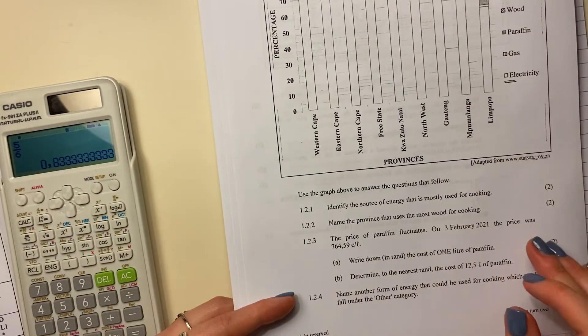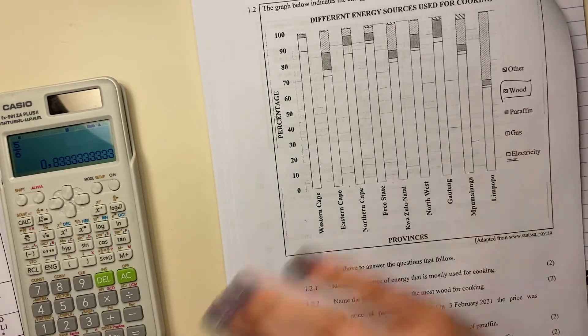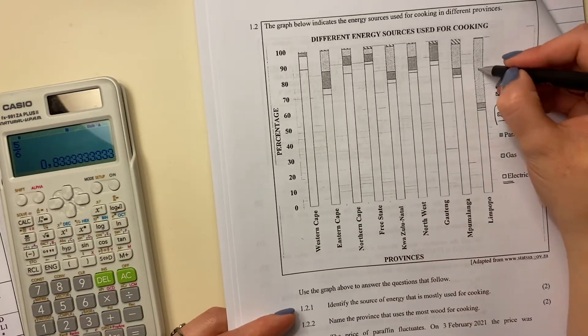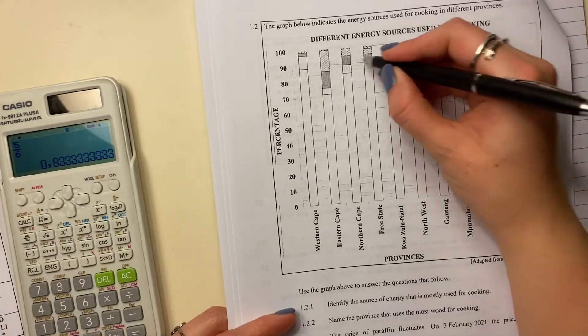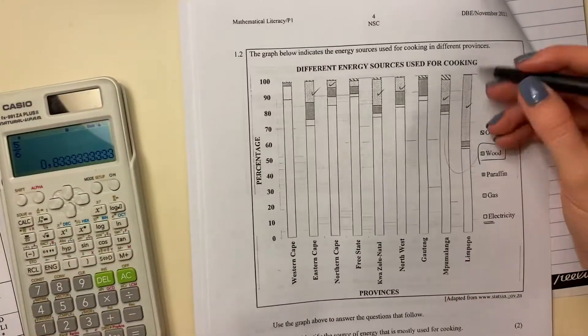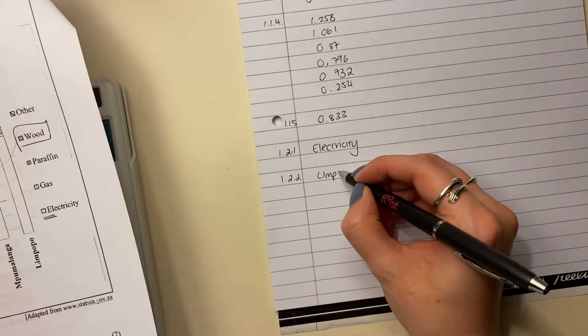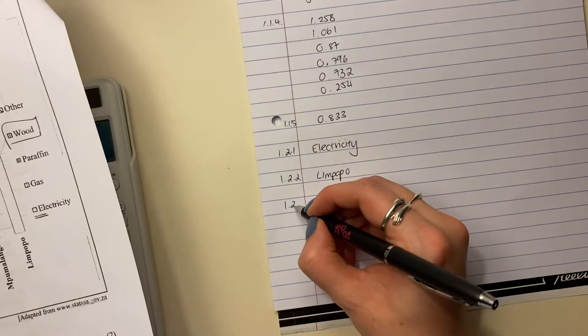Then it says, name the province that uses the most wood for cooking. So what is this kind of like stripey stripe, right? The stripey stripes are there, but you can see clearly that Limpopo uses the most, right? Because you can see it's the largest proportion there. So we're going to say Limpopo. We're doing sterlingly here.